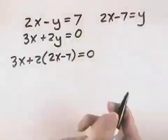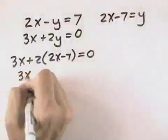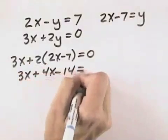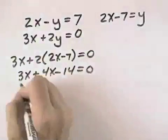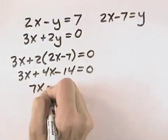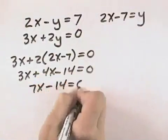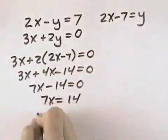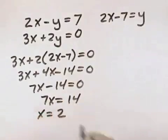So now I have one equation with one variable that I can solve. So I have 3x. Multiplying this out, I get 4x minus 14 equals 0. And so this gives me 3x and 4x is 7x, minus 14. And I can add 14 to the other side. And finally, divide by 7 to see that x is going to equal 2.